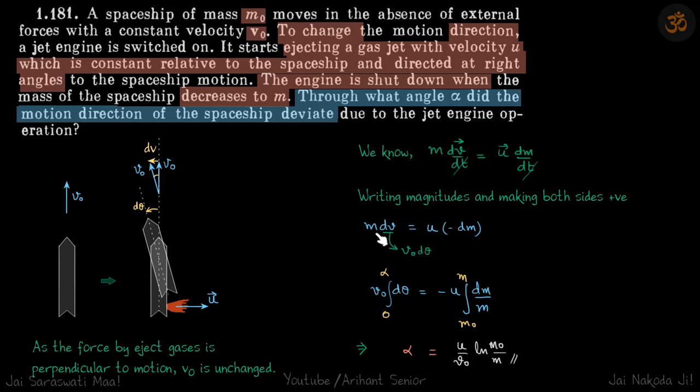And v we write as v₀ dθ, so now we have a relation between θ and mass, and that's what we wanted. We'll integrate: θ ranges from 0 to α, and mass goes from m₀ to m. This gives the angle α, the total deviation of the rocket.